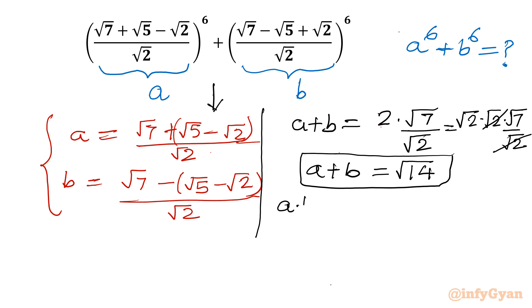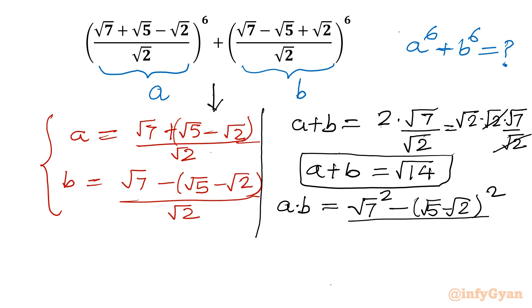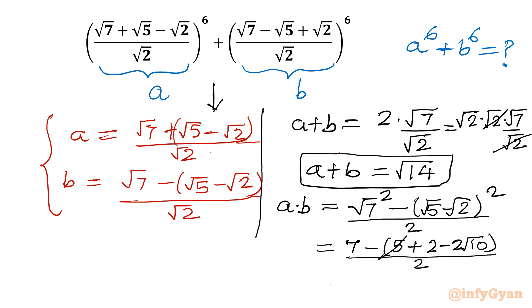Now let's find a × b. It is (√7 + (√5 - √2)) × (√7 - (√5 - √2)) divided by √2 × √2, which is a difference of squares: (√7)² - (√5 - √2)² divided by 2. This gives 7 minus (5 + 2 - 2√10) divided by 2, which simplifies to 2√10 over 2. So a × b = √10.